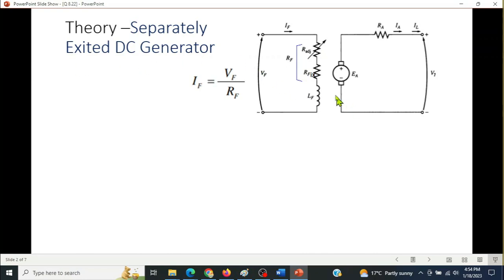It is a field winding, and this is an armature winding. The formula is field current IF equals total voltage VF divided by RF resistance, the total resistance.